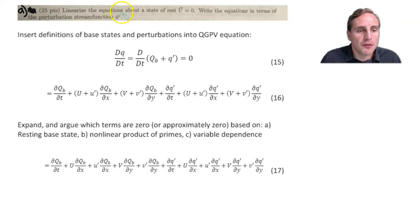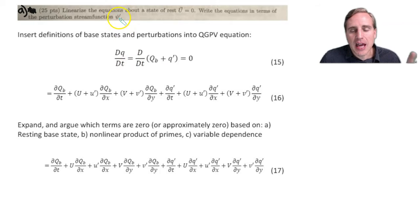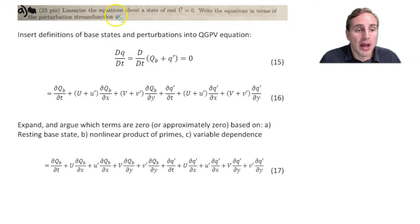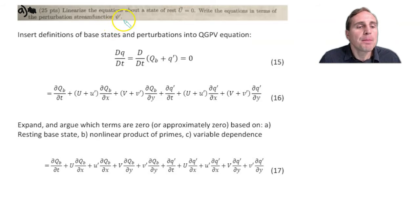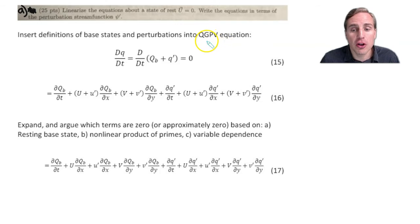Since psi is the stream function and the horizontal velocities are related to psi, think of psi as being related to the change in the geopotential height h, having to do with pressure gradients. Because only as we have pressure gradients of the background pressure field do we actually have horizontal velocities being accelerated. We want to insert the definitions of the base states and the perturbations into the quasi-geostrophic potential vorticity equation, as shown in parts 0 and 1.